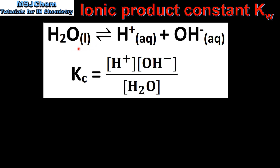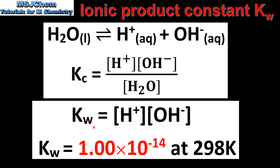The equilibrium lies very much to the left, so the concentration of water is more or less constant, and that becomes part of Kc. We have a new expression, which is the Kw — the ionic product constant of water. So Kw equals the concentration of the hydrogen ions multiplied by the concentration of the hydroxide ions, and the value for Kw is 1.00 times 10 to the negative 14 at 298 K.